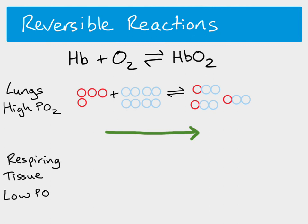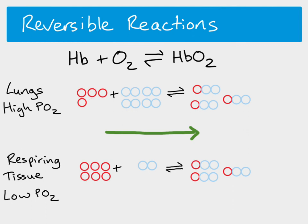In the respiring tissues we see the reverse: there is a low partial pressure of oxygen. The oxyhemoglobin has travelled in the blood from the lungs, but now the low oxygen partial pressure favours the reverse reaction — this is a Le Chatelier's principle effect from chemistry. So the reverse reaction is favoured, oxygen unbinds from hemoglobin, and more oxygen becomes available in the tissues.